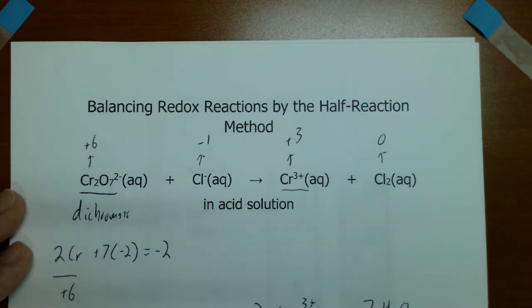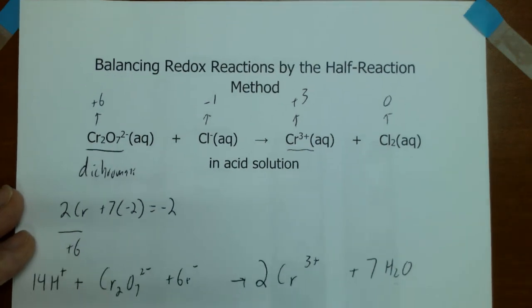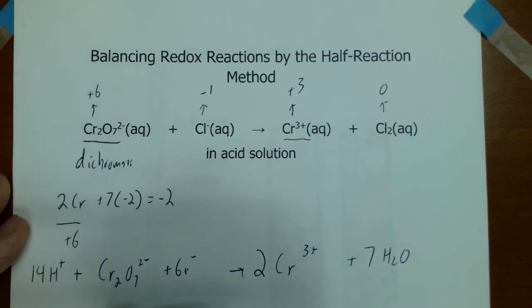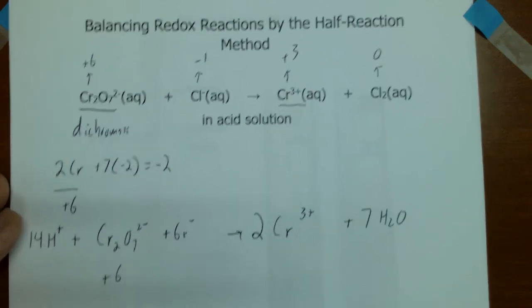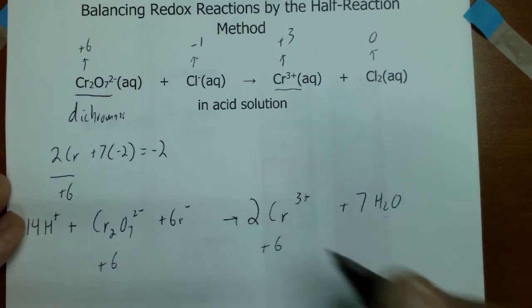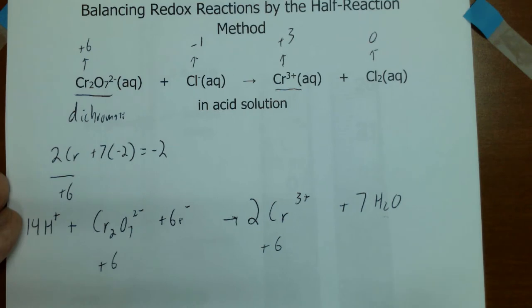When balancing an equation, we must balance not only atoms but also charges. On the reactant side we have +14, −2, and −6, giving a net of +6. On the product side we also have +6. So the charges balance, and this is the complete reduction half-reaction.